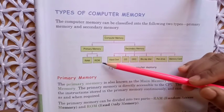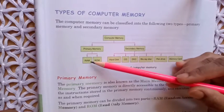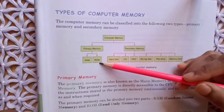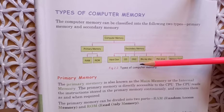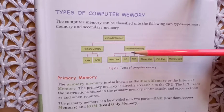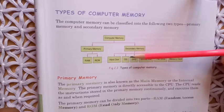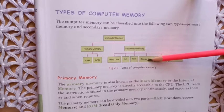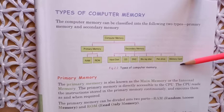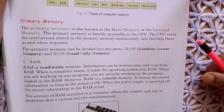Primary memory is further divided into another two parts, that is RAM and ROM. And secondary memory has so many parts: first is hard disk, then CD, DVD, Blu-ray disk, pen drive and memory card. So let's start with primary memory.